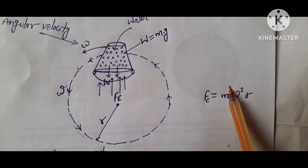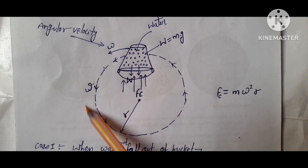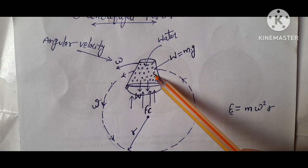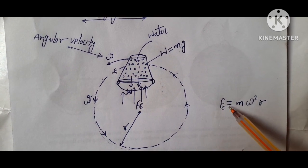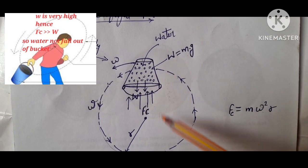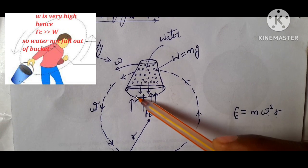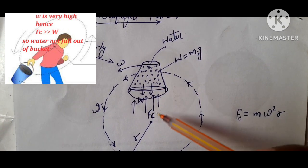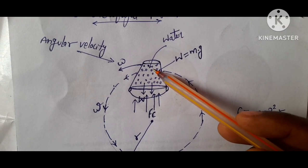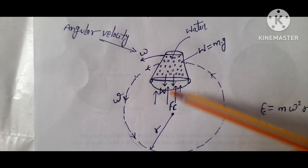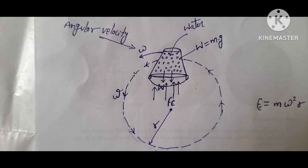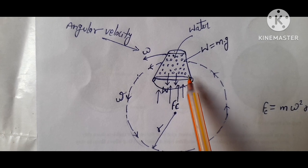If the bucket is quickly rotated in this direction, because the omega value is very high, the centrifugal force is very high compared to water weight mg. The centrifugal force direction pushes water inside the bucket, so water does not come out of the bucket.